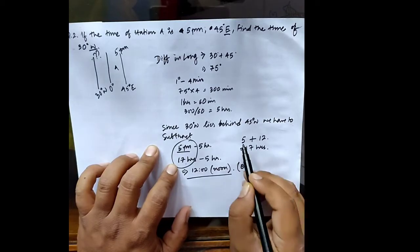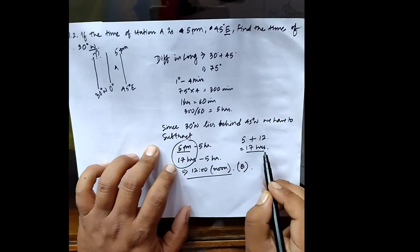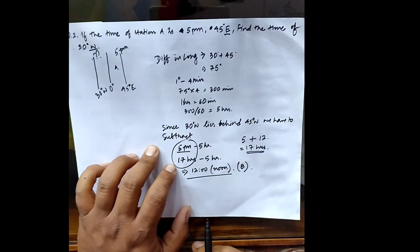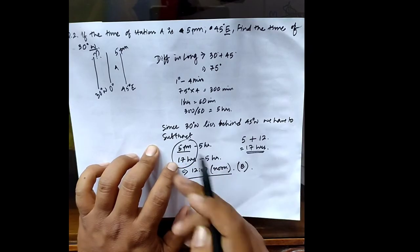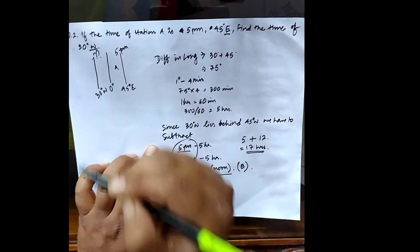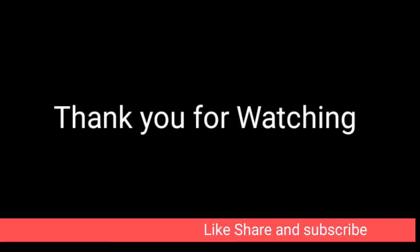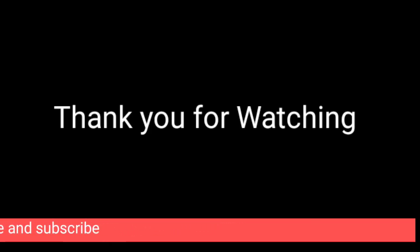To convert 5 p.m. into 24-hour format, we add 12 to get 17 hours. Then 17 hours minus 5 hours equals 12 hours, or 12 noon. If you like the video, please share, subscribe to my channel, and like the video too. Thank you for watching.